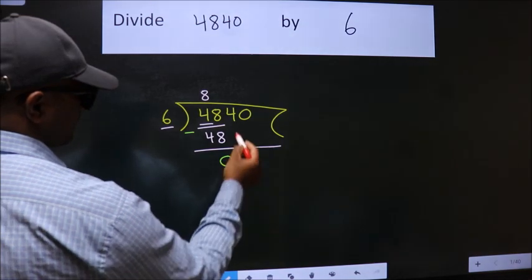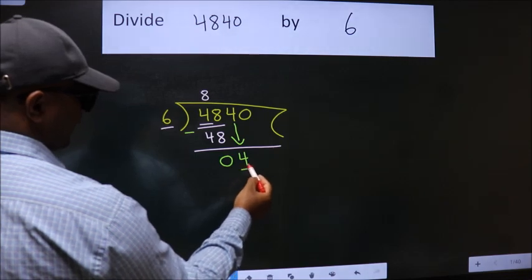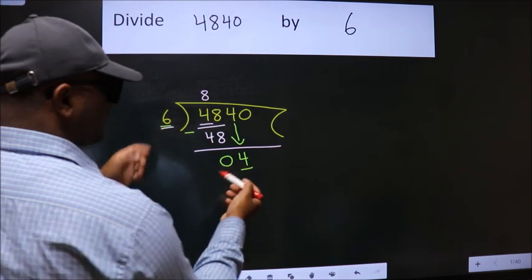After this, bring down the beside number. So, 4 down. Here we have 4. Here 6. 4 is smaller than 6.